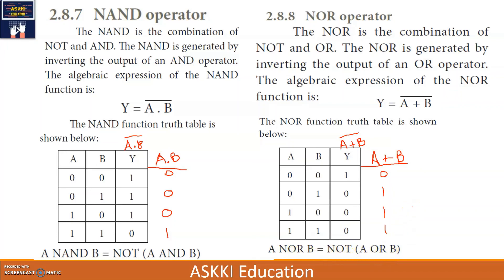So these are the basic operators — AND, OR, NOT, NAND, and NOR. For more detail on logic gates, watch the next video on the Ask Education Channel. Please subscribe to our channel. Thank you for watching this video.